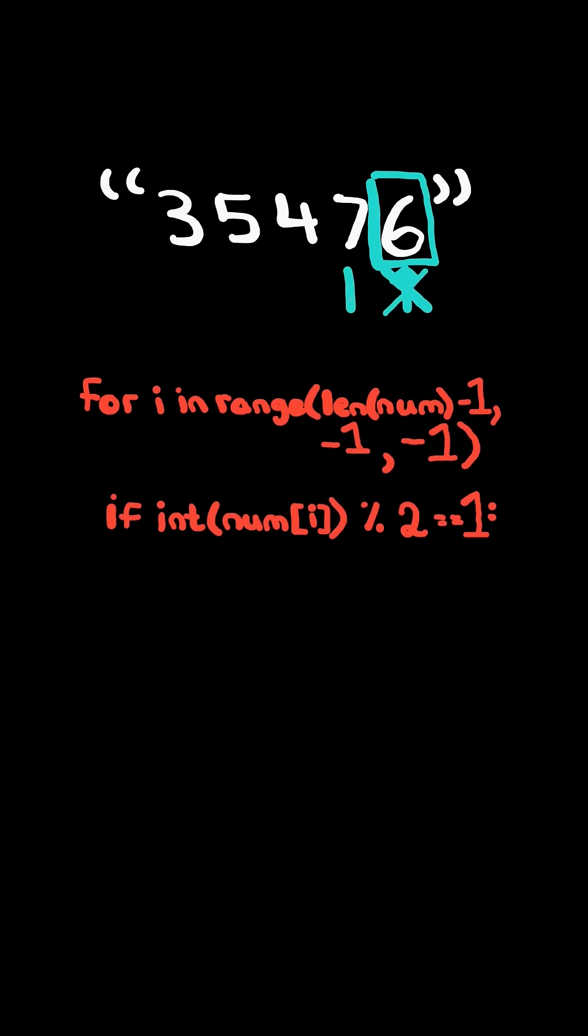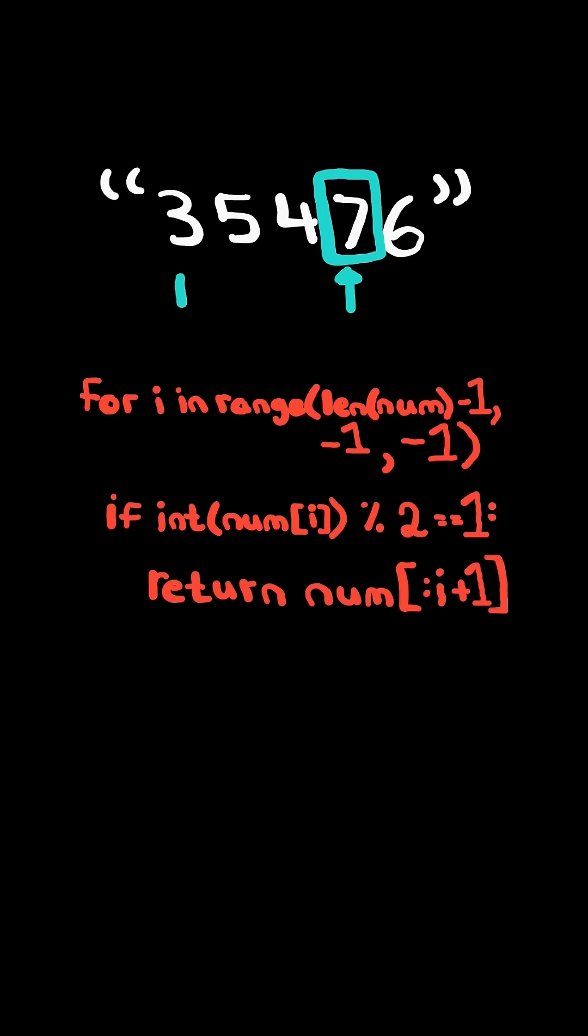If it's not an odd digit, then we continue. But if the digit is odd, we can stop here and simply return the number from the beginning to the current number we are on. And this will be the maximum odd integer.